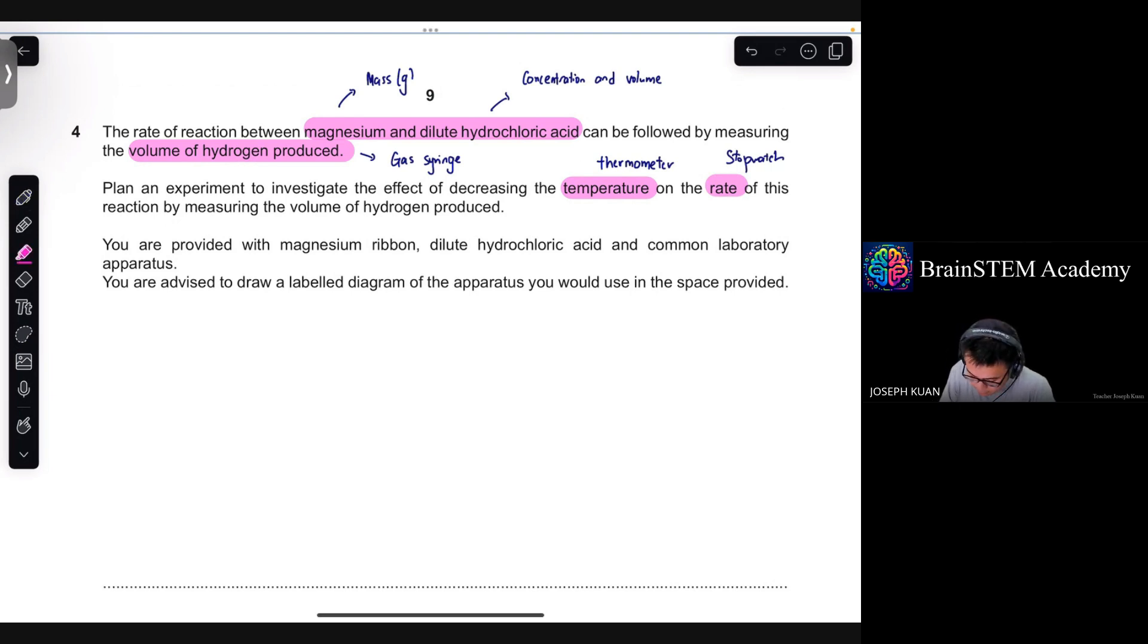So you have magnesium ribbon, dilute hydrochloric acid and common laboratory apparatus. Having understood the objects of the question, we should think of variables. My tip to students is that you should think of the variables. There are three types, which is the constant variable, the manipulator variable, as well as the responding variable.